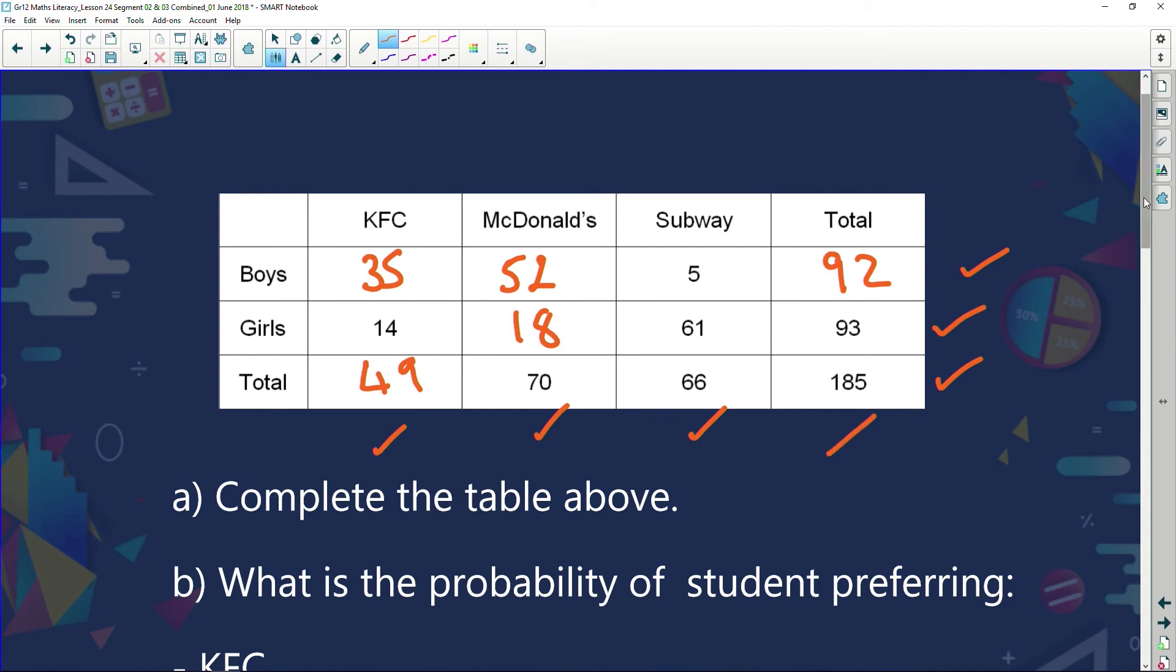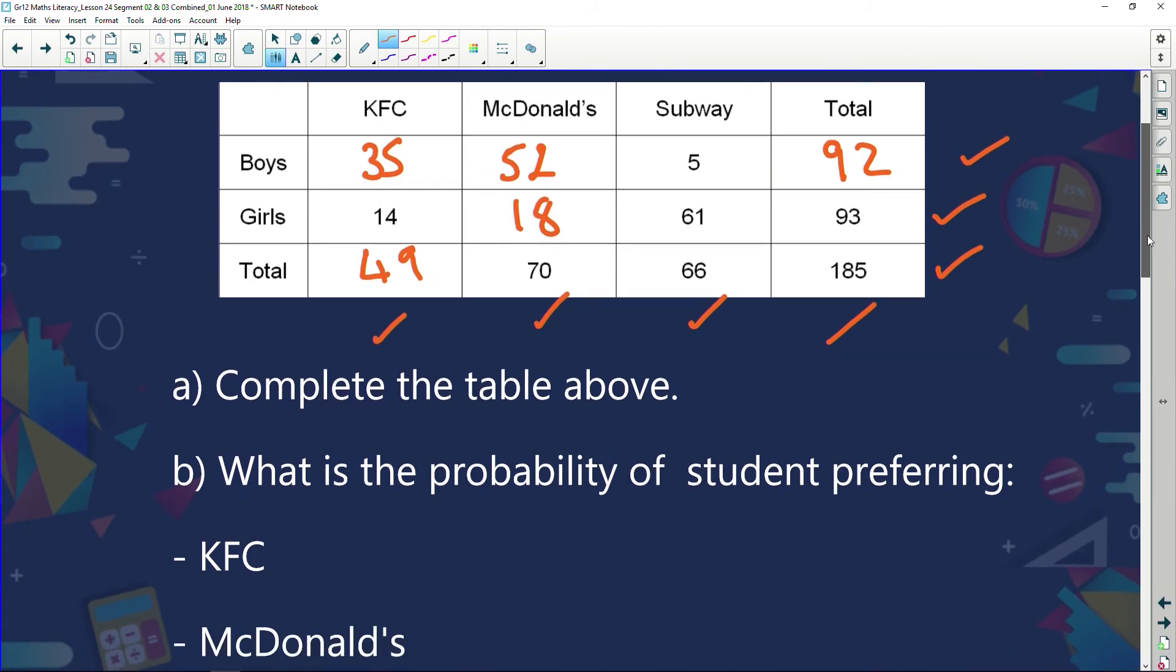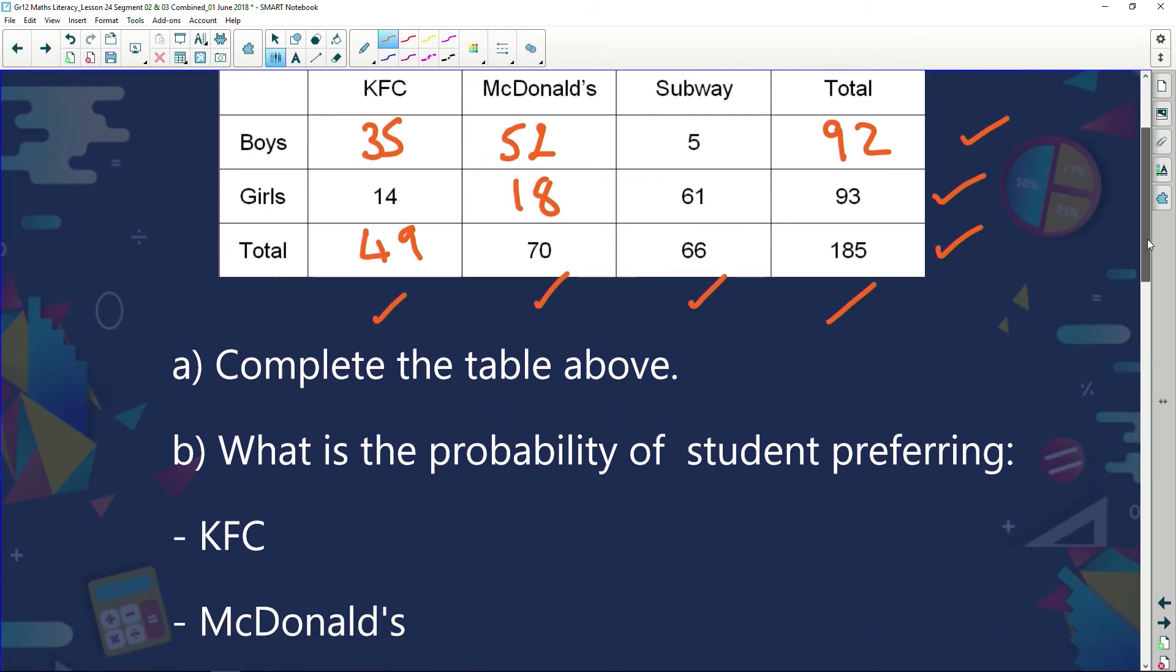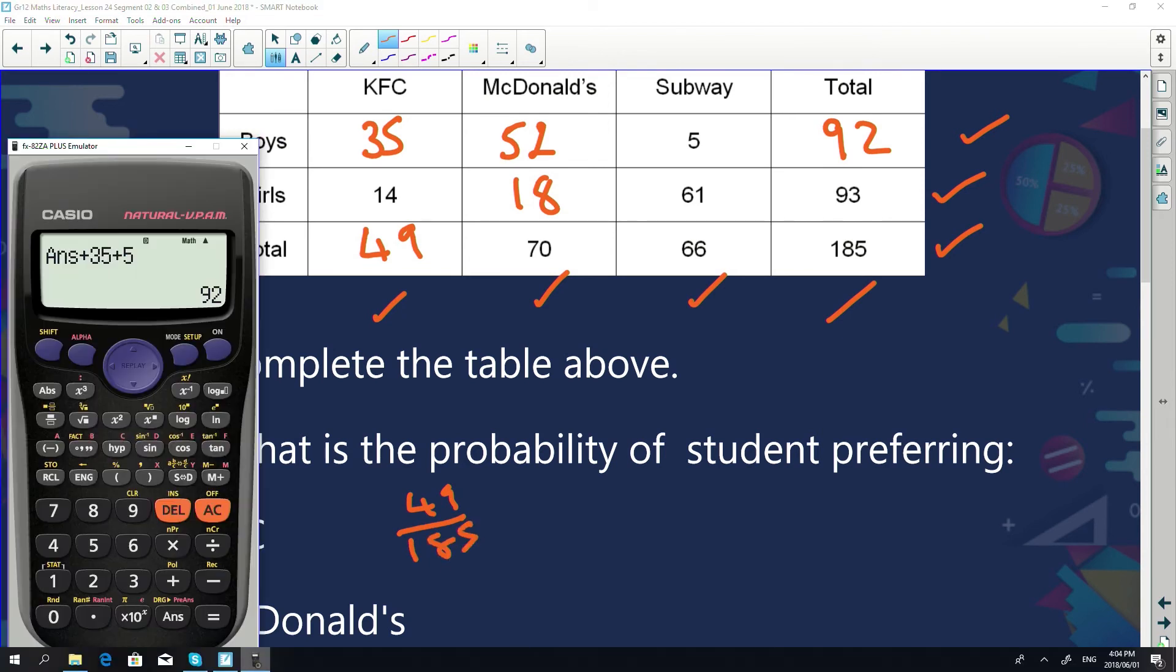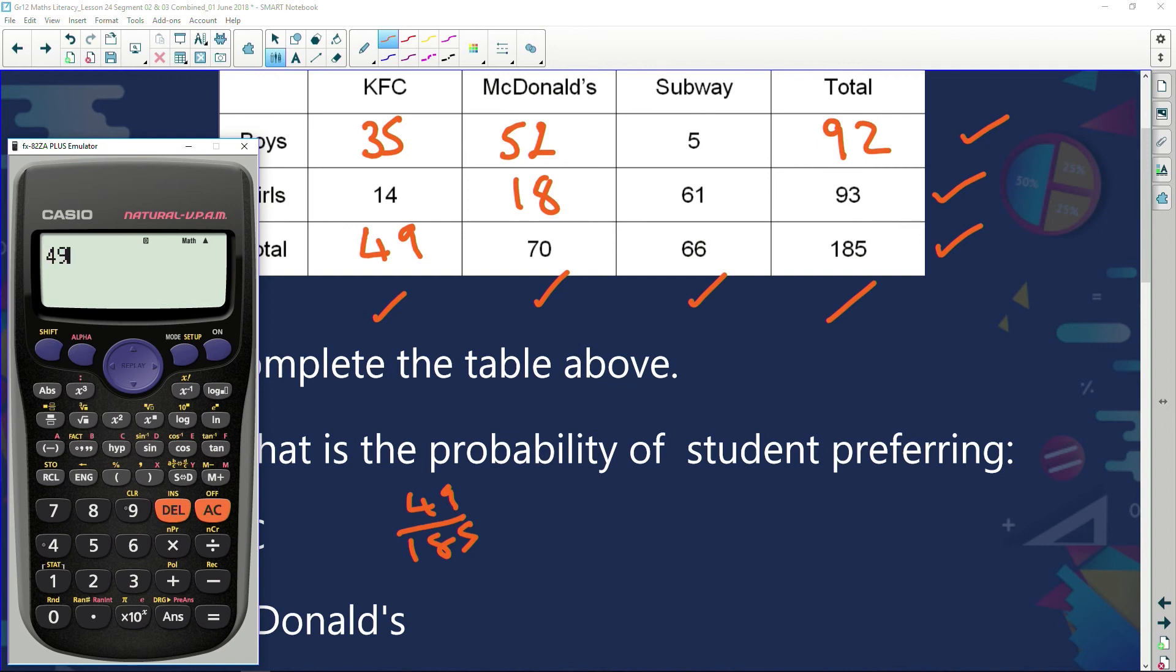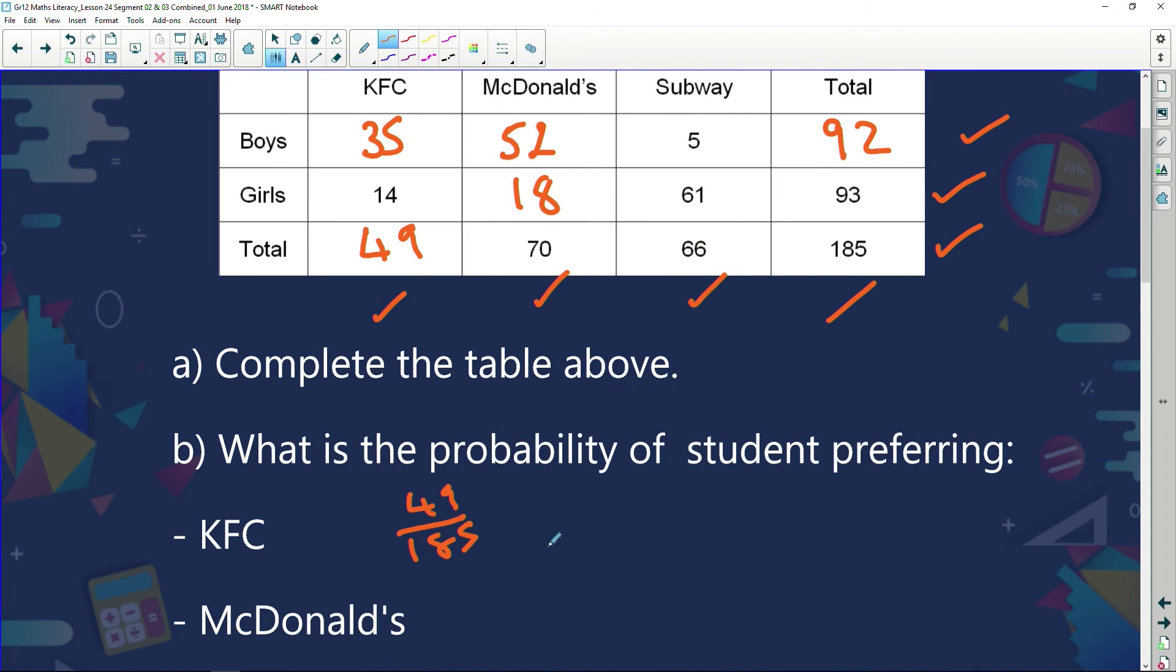What is the probability of a student preferring KFC? Total number: 49 out of a possible 185. Can we simplify that? Well, let's check. We've got 49 over a possible 185 students we questioned. It stays 49 over 185. We can't simplify that.